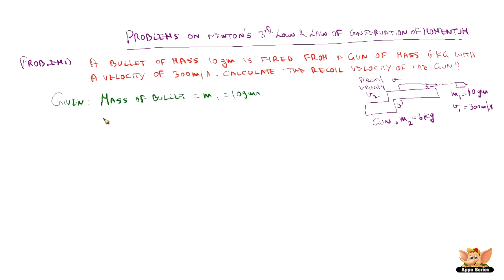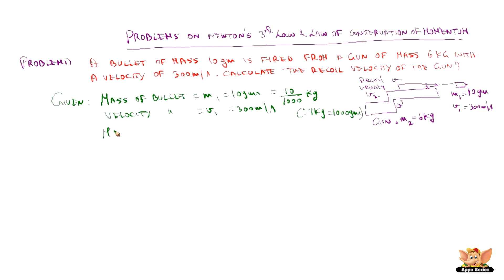Given: mass of bullet M1 is 10 grams, and velocity of bullet V1 is 300 meters per second. We need to convert grams into kg since momentum is in terms of kg, so 10 divided by 1000 kg, since 1 kg equals 1000 grams. Mass of gun M2 is 6 kg. The recoil velocity of the gun is V2, which we need to find.